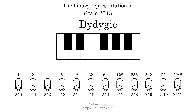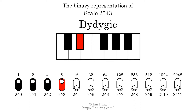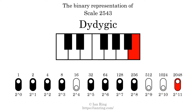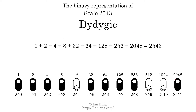The binary representation of this scale is determined by mapping tones of the scale to binary digits. Each binary digit represents a power of 2. To get the scale number, we add the powers of 2 together. The powers of 2 that are present in the scale, all added together, equals 2543. That is why the scale number, in decimal, is 2,543.